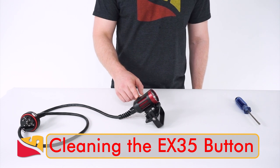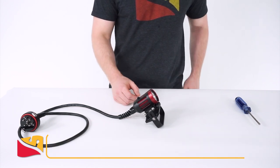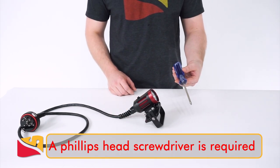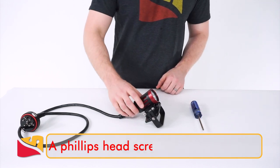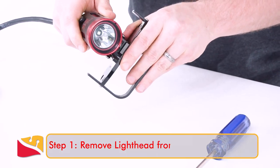The EX-35 features a magnetic button that is easily accessible for cleaning or servicing. The only tool that you will need to remove the button is a Phillips head screwdriver. We're going to begin by removing the light head from the Goodman handle.